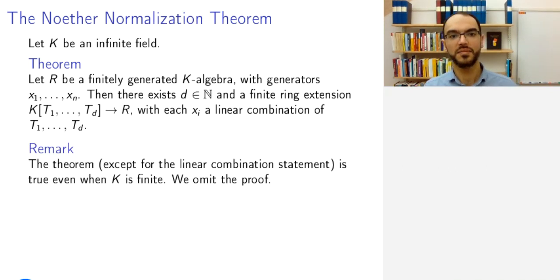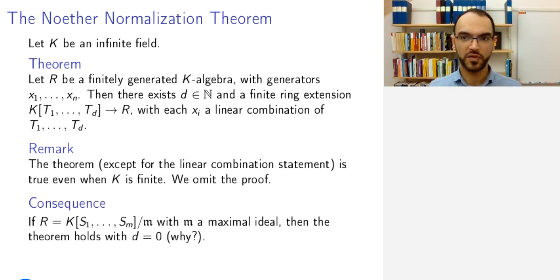One remark to be made is that the theorem holds over finite fields as well, but not this linear combination part. For finite fields, we need to tweak the proof a bit and replace these linear combinations by something more intricate. We will not go into that in this course, since anyway, we mostly use this when K is an algebraically closed, and hence, of course, infinite field.